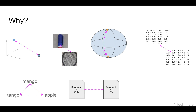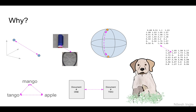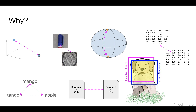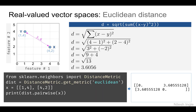Another example would be finding distances between two words or different phrases, and we can find distances between two documents to determine if those two documents are similar or different. In future videos on neural networks, we'll also see that we can find the similarity between two bounding boxes to see if they are representing the same part of an image.